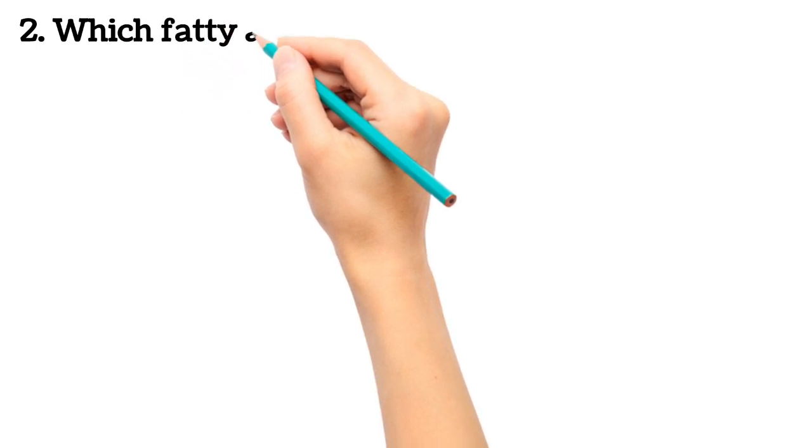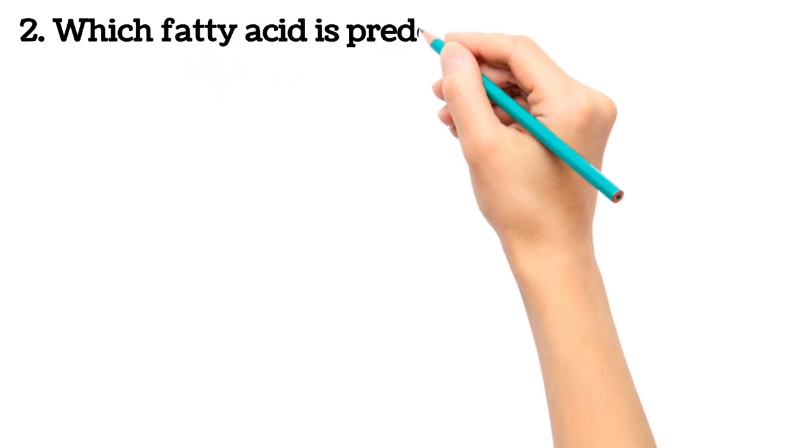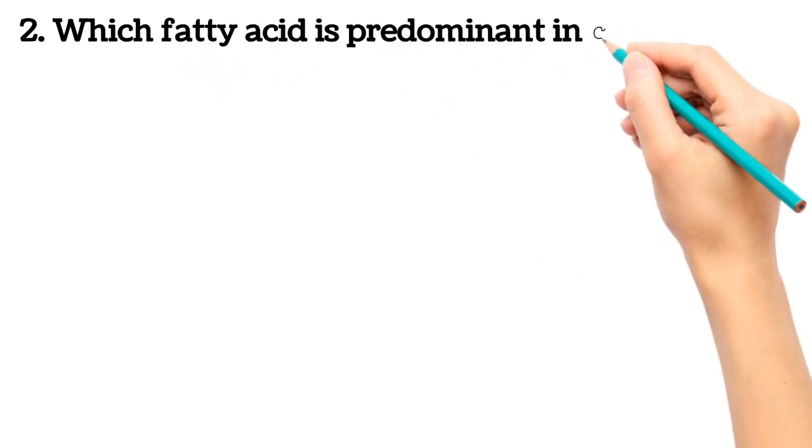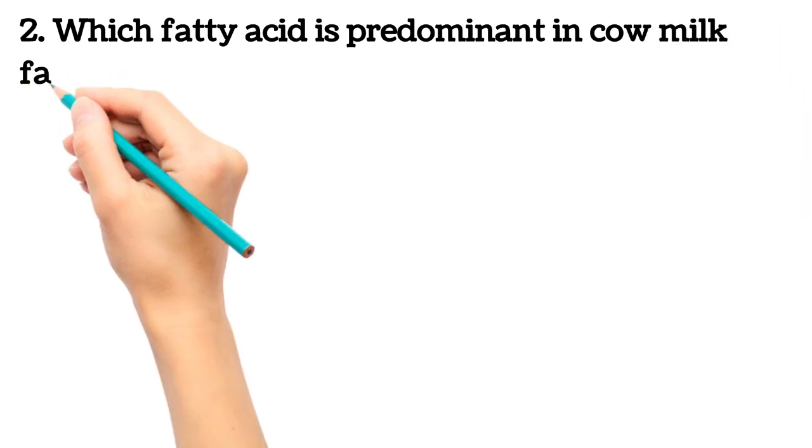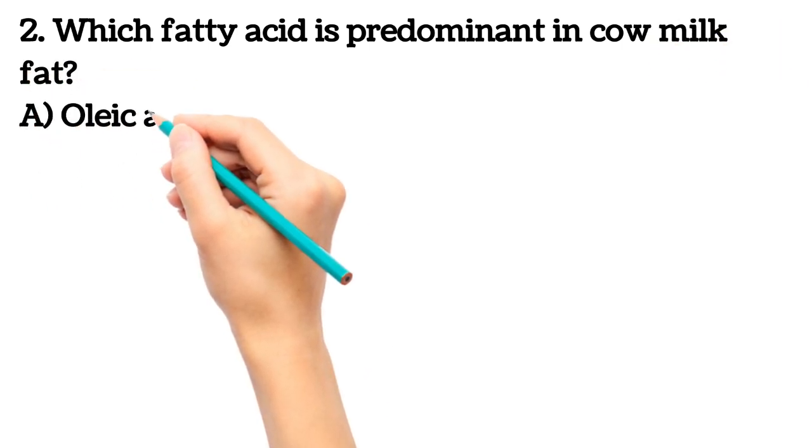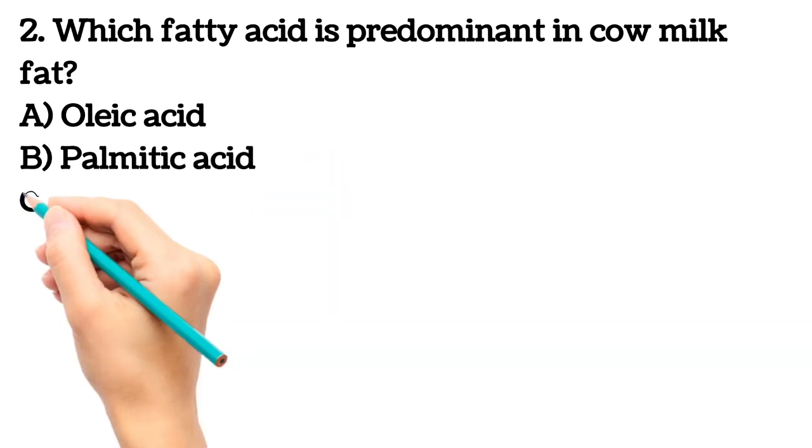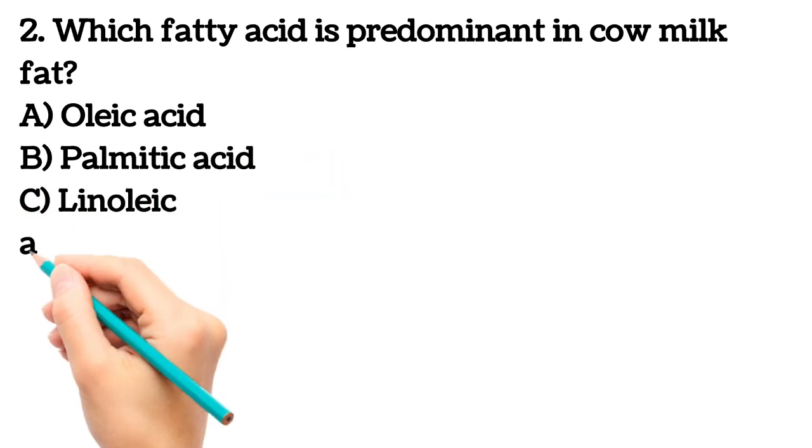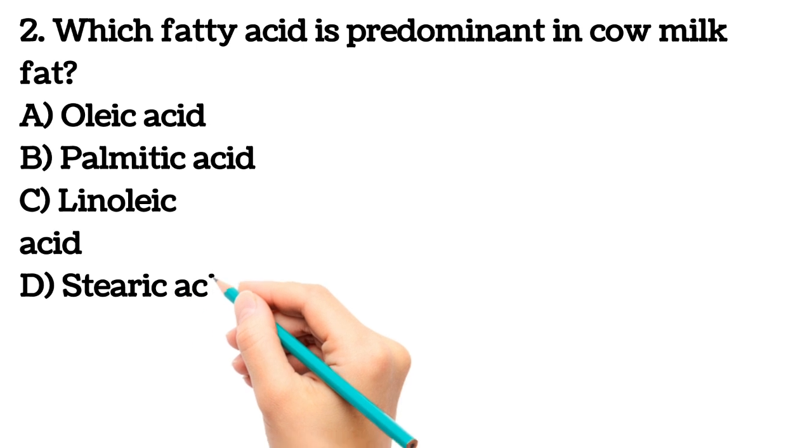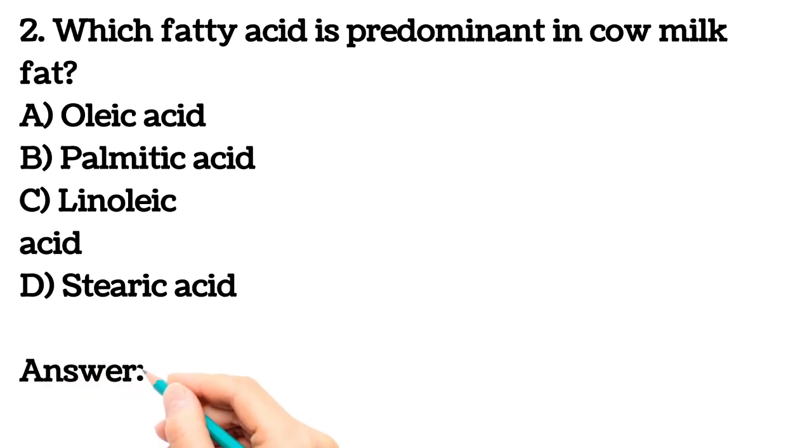Next question. Which fatty acid is predominant in cow milk fat? A. Palmitic acid B. Palmitic acid C. Linoleic acid D. Stearic acid. Here answer is D, Palmitic acid.